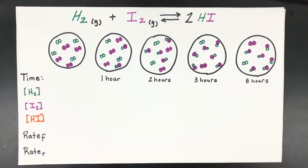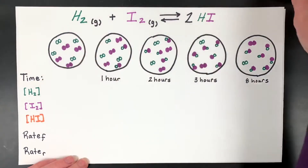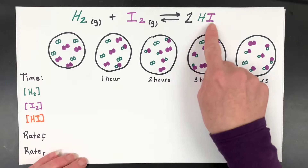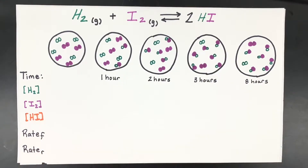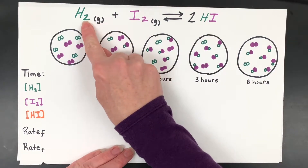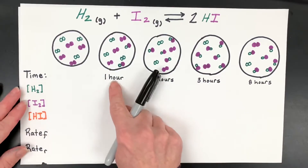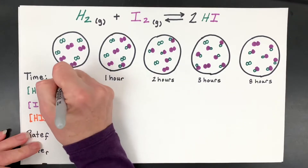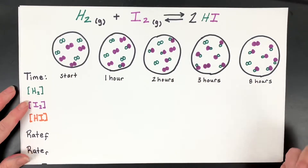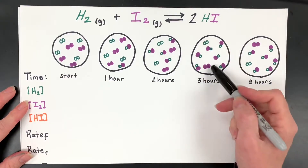Now let's go on to the drawing. We're going to take hydrogen and iodine — I'll use green for hydrogen since white isn't possible, and purple for the iodine. I'll use orange to count my HIs. The HI comes from the hydrogen and the diatomic iodine. So at one hour — this is the start, time zero — we count the particles.